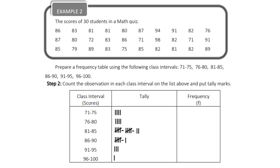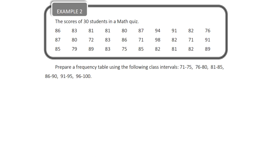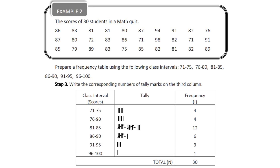We can now proceed to step 3, which is counting the frequency for each interval. For the class interval 71 to 75, the frequency is 4. For 76 to 80, that is also 4. For 81 to 85, the frequency is 12. For 86 to 90, the frequency is 6. For 91 to 95, the frequency is 3. And 96 to 100, the frequency is 1. The total, when we add all of those, is 30 — equal to the number of data gathered. This is our frequency table for example number two.